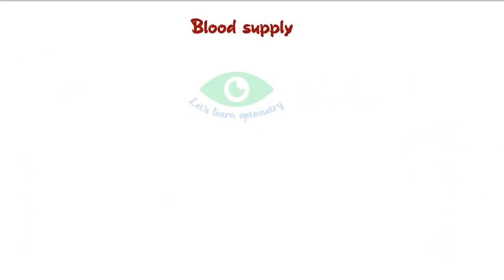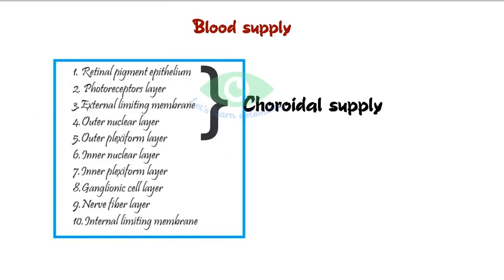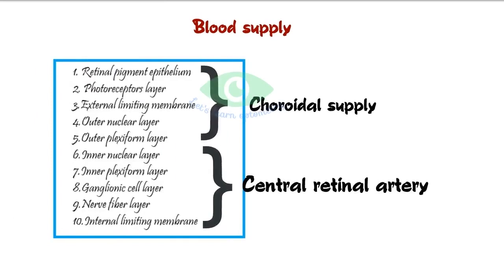Regarding blood supply: the outer five layers are supplied by the choriocapillaris, and the inner five layers are supplied by the central retinal artery.